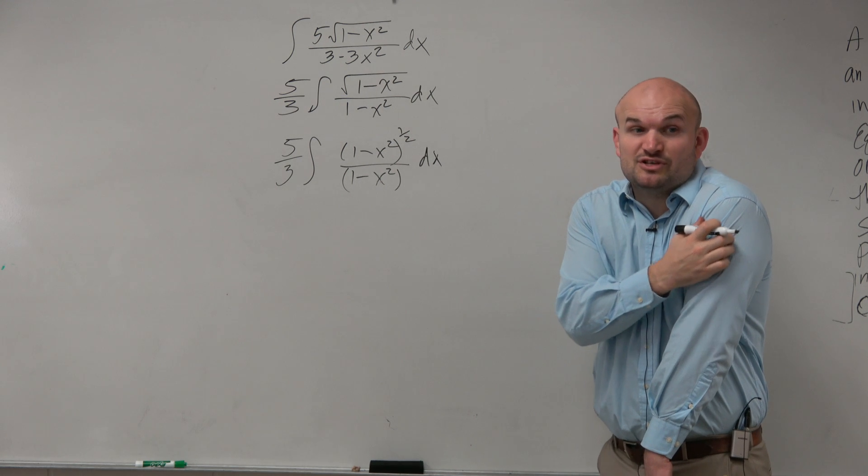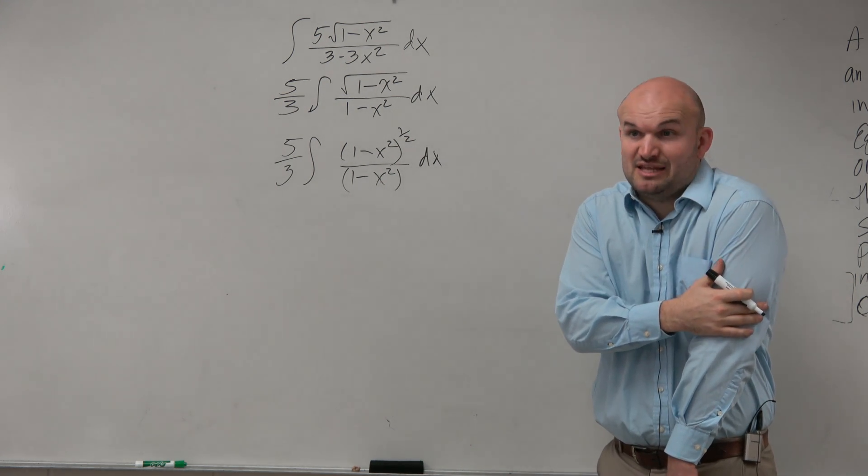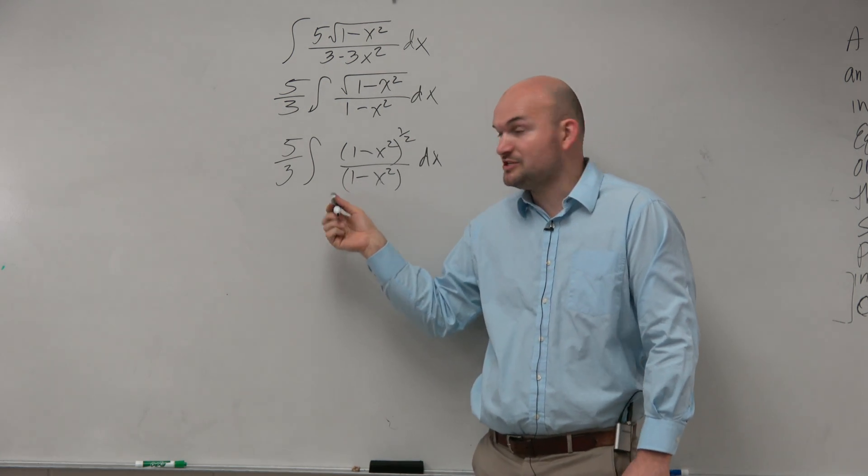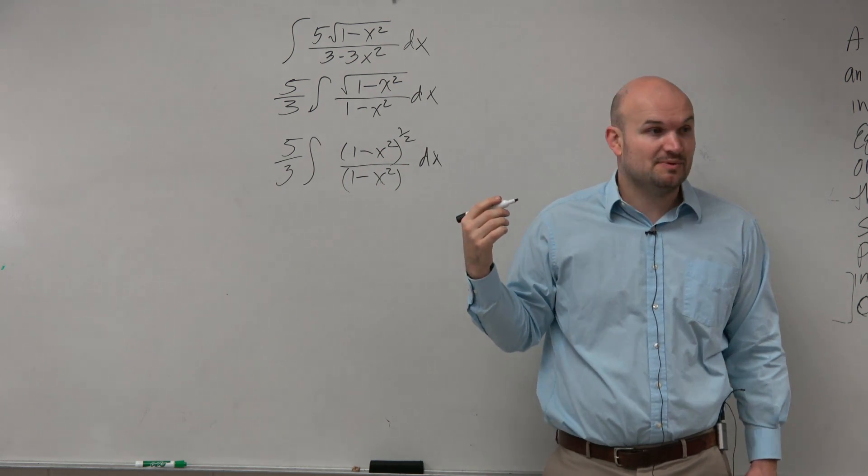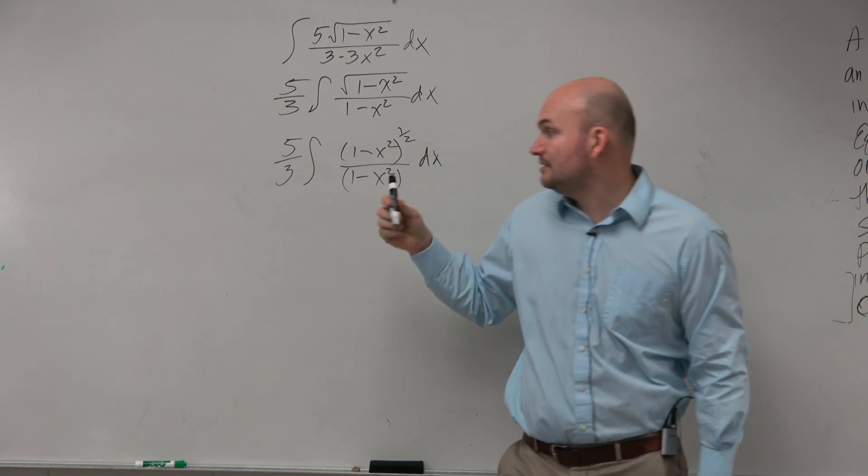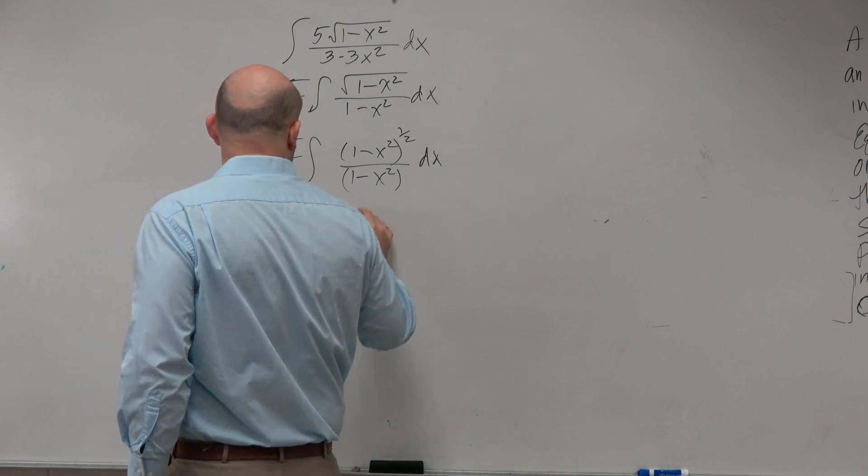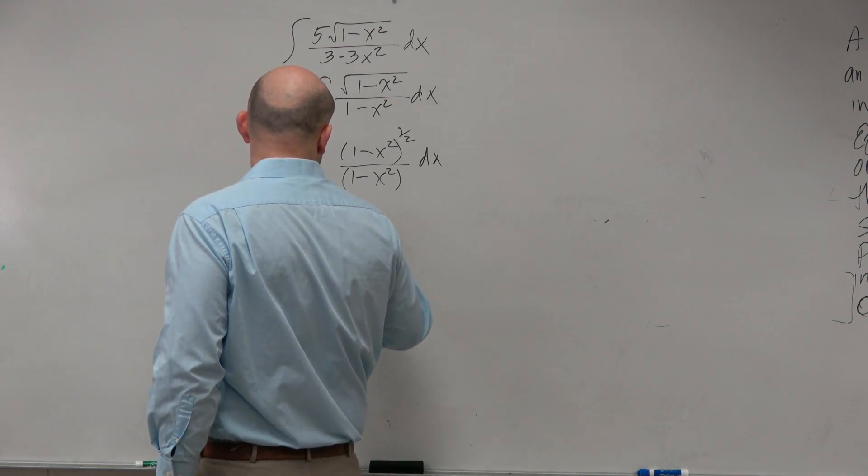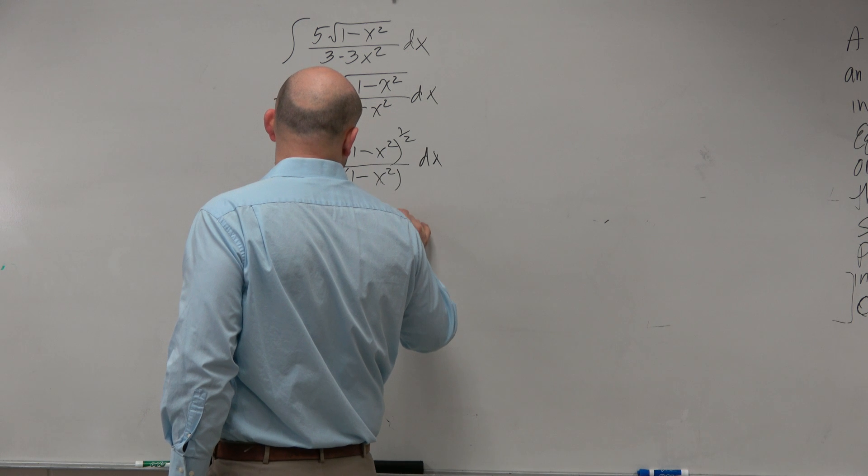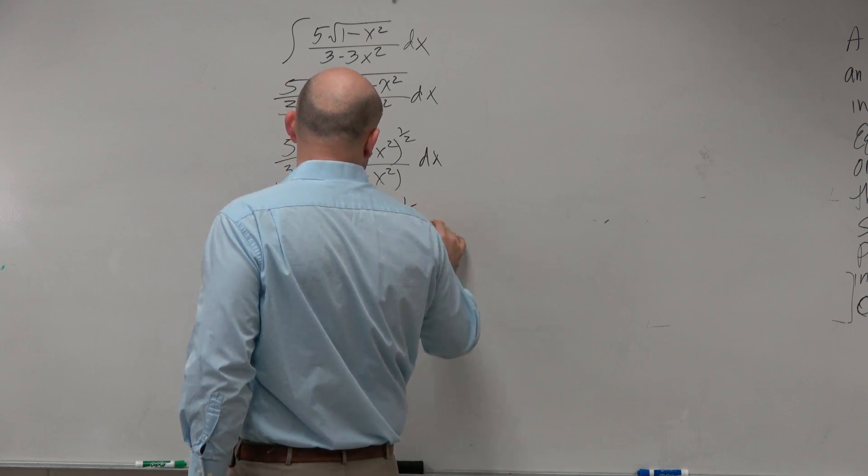Because wouldn't you guys agree? Now we're just dividing exponents. The base is our expression, but we're basically dividing exponents, which would mean that this is going to be 5/3 over 1 minus x squared to the negative 1/2 power dx.